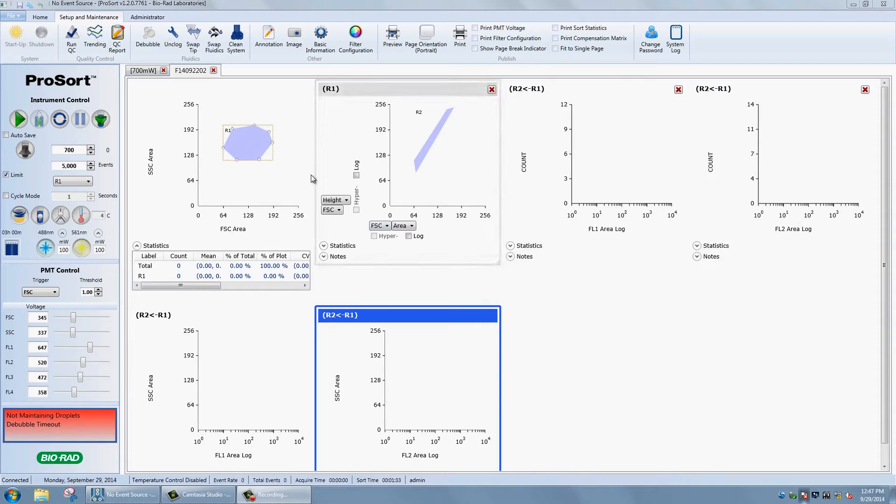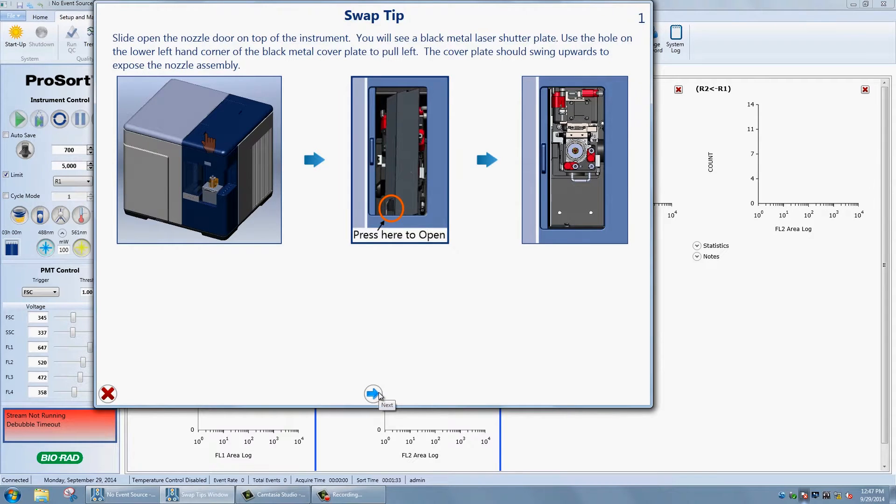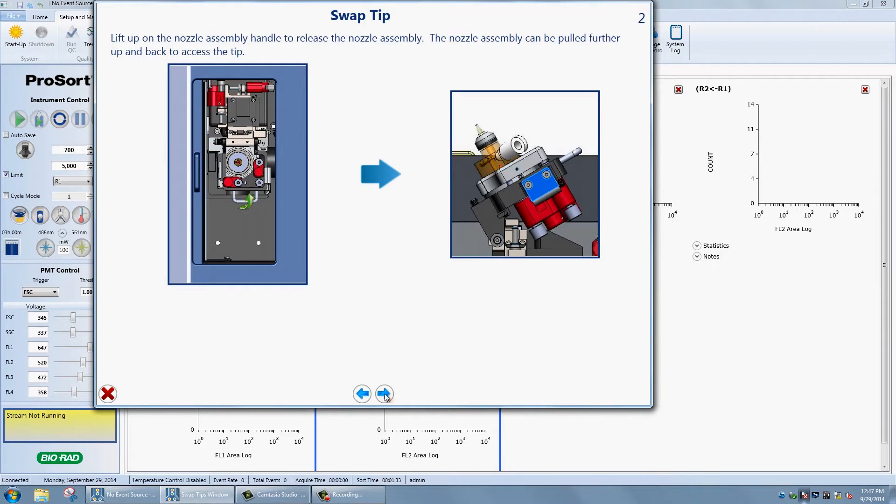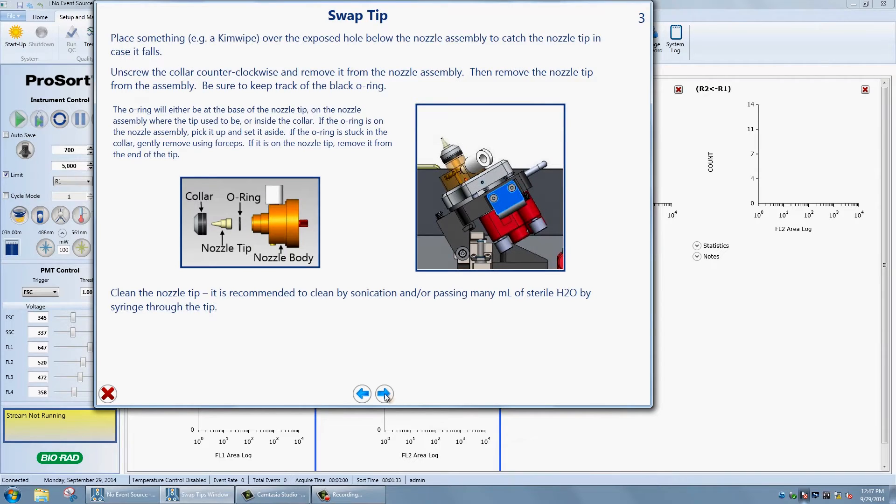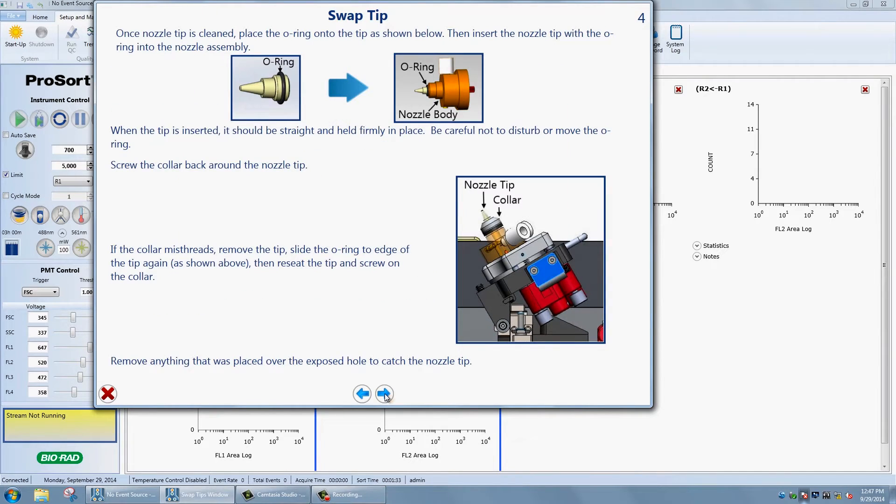By simply clicking the tip swap button within the ProSort software, you can easily change the nozzle tip and then sit back and watch the system make automatic adjustments that ensure perfect nozzle tip and stream-to-optics alignment and setup.